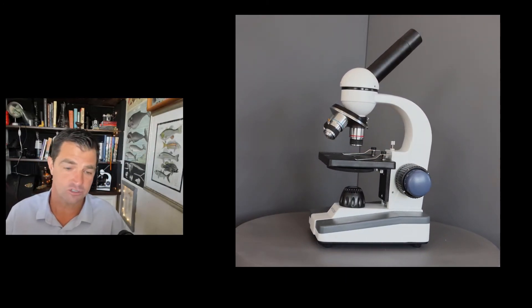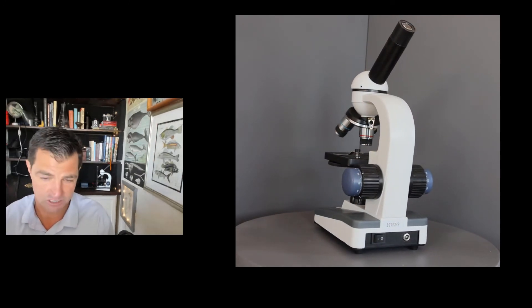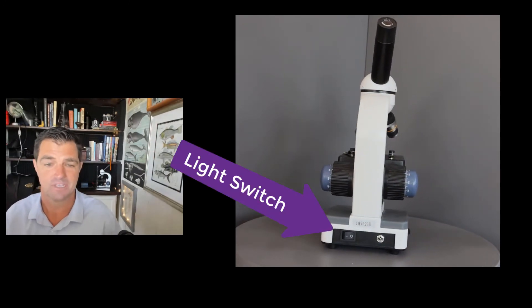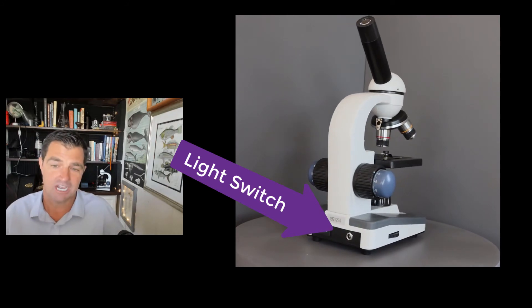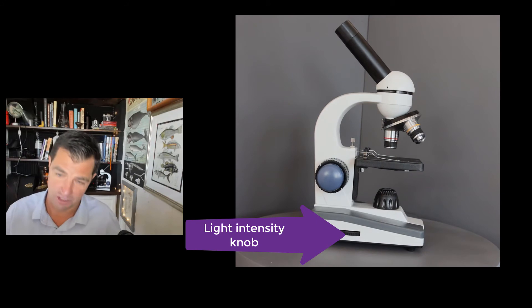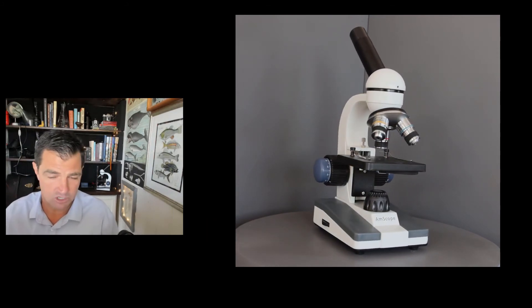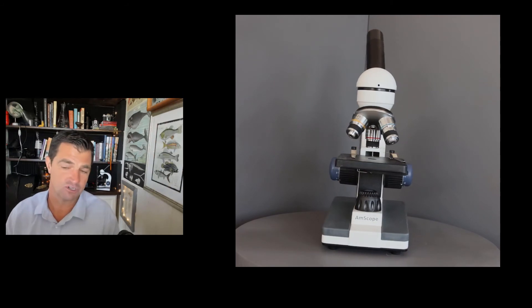The fine focus knob also moves the stage, but the movement is far less noticeable. If you turn it, you'll see. Finally, we have the light switch and the light intensity knob, and these are used to turn on the microscope and to adjust the amount of light that is passing through the slide you're looking at.